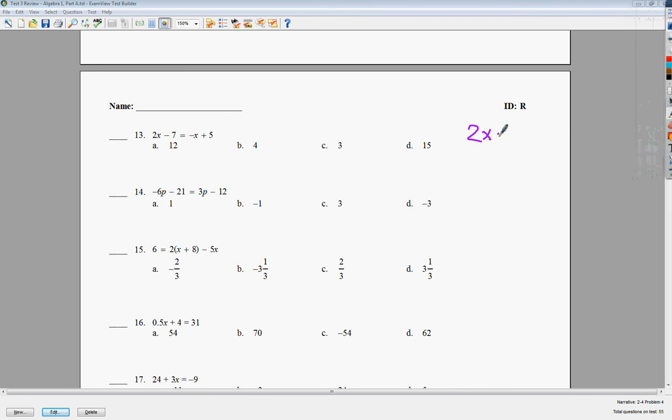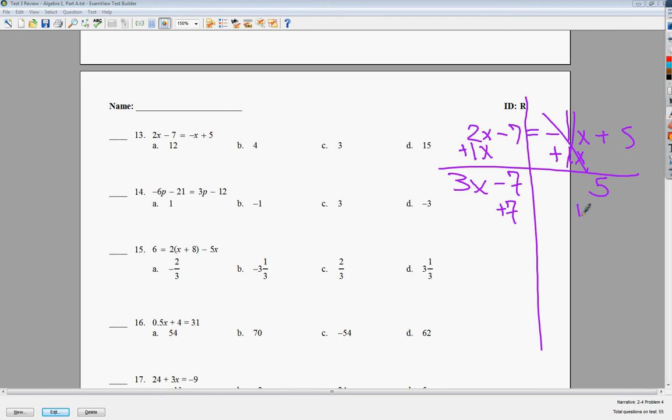2X minus 7 is equal to negative X plus 5. Now, my suggestion after you draw your line is to put a 1 in front of the X. It'll make it easier to see what you're going to do next. Otherwise, you'll lose it maybe. Add 1X to both sides because I need to move the entire term over here. 2 plus 1 is 3X minus 7. Bring down 5. These canceled. Now, instead of minus 7, I need to add 7. 12. In order to get rid of times 3, I need to divide. X is equal to 4. So my answer to number 13 is B.